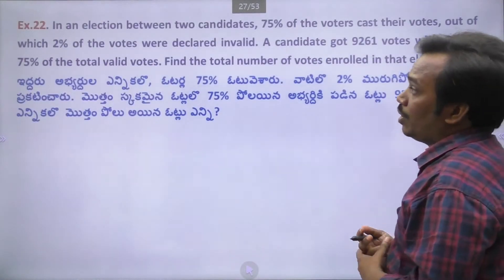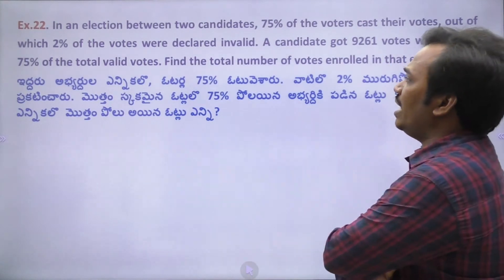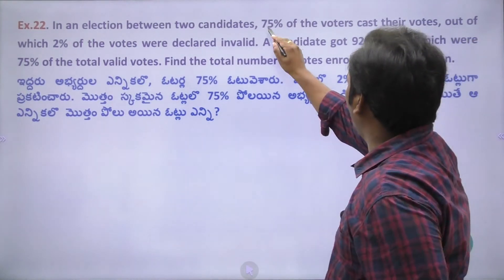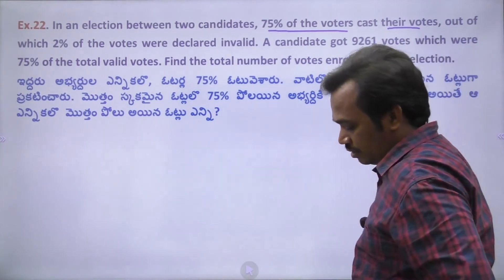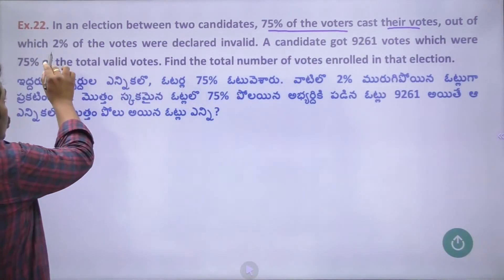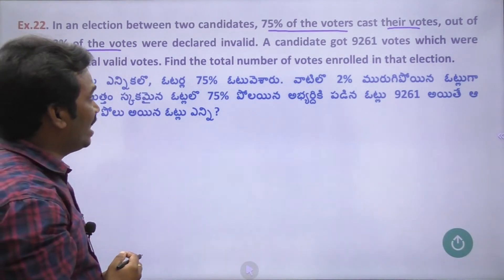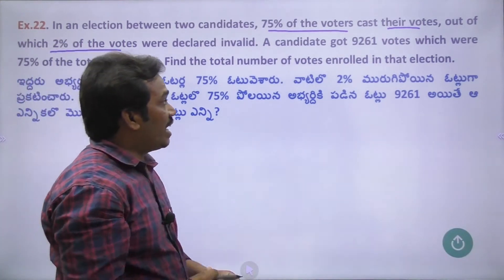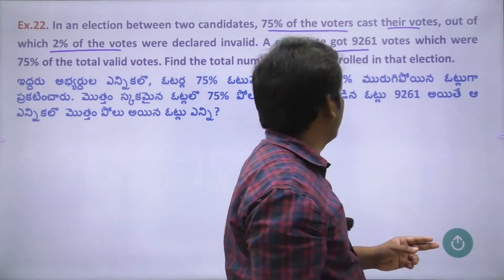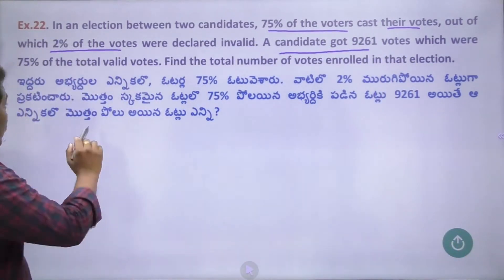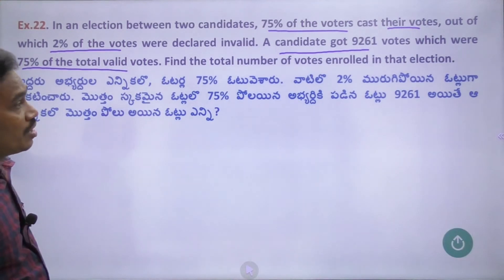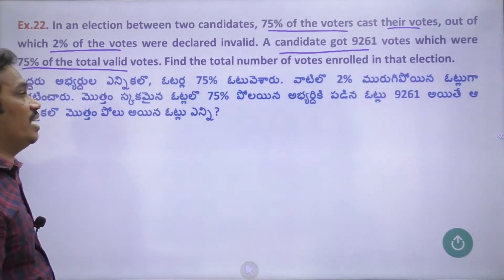Next, problem number 22: In an election between two candidates, 75% of the voters cast their vote. Out of which, 2% of voters were declared invalid. A candidate got 9260 votes which were 75% of the total valid votes. Find the total number of voters in that election.